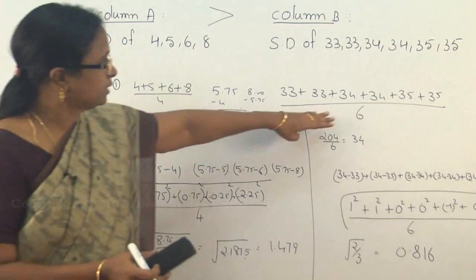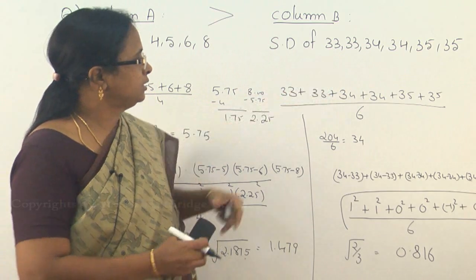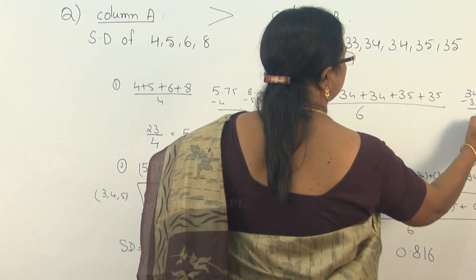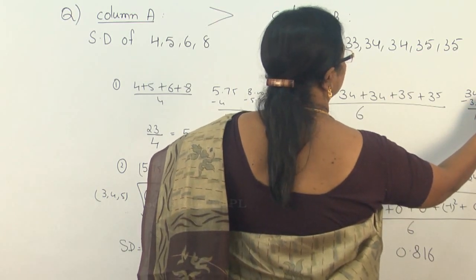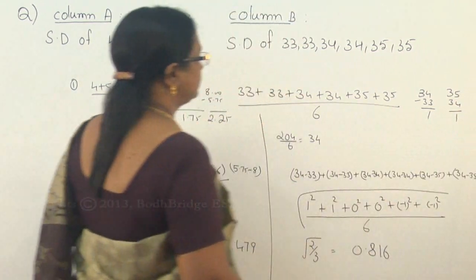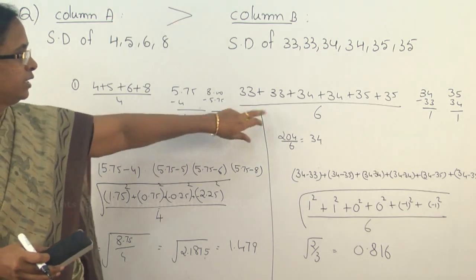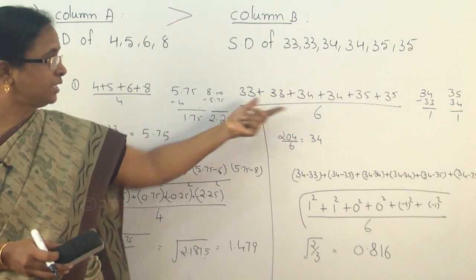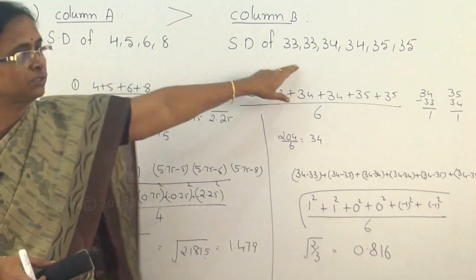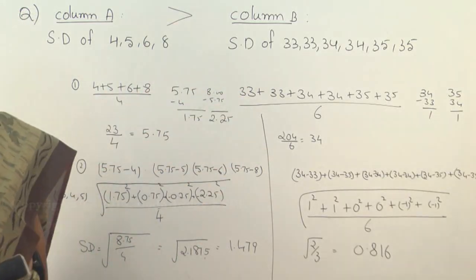Therefore, the standard deviation is closer to this value. But here, in this case, the middle value is 34 and from the 34 to the least value, you can see the difference is 34 minus 33 which is 1, or you can take 35, the highest value minus the mean which is again 1. So here the difference is only 1. In this case, the difference is more than 1 whereas here the difference is only 1. The deviation here is less compared to this one. Therefore, the standard deviation of this data is more compared to this one. So instead of doing all this calculation, you can just compare and tell which is greater.